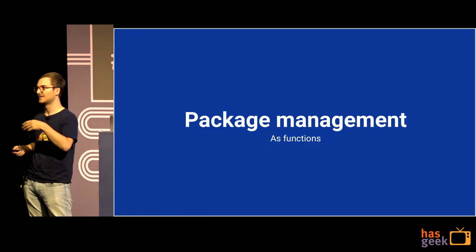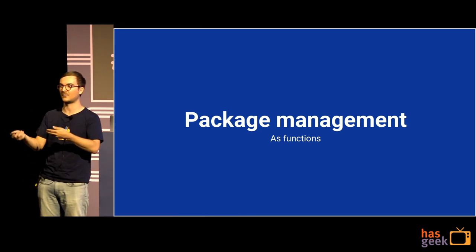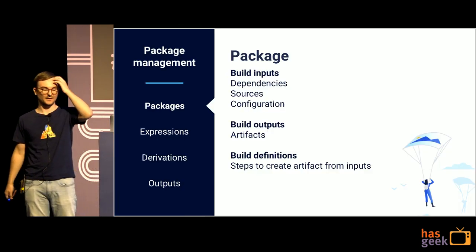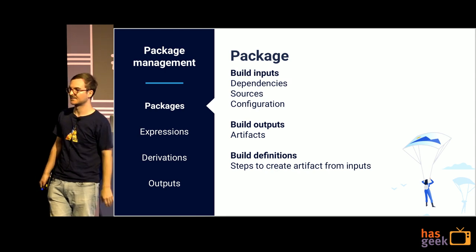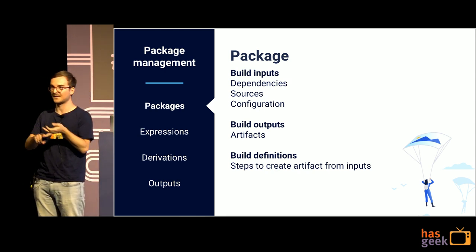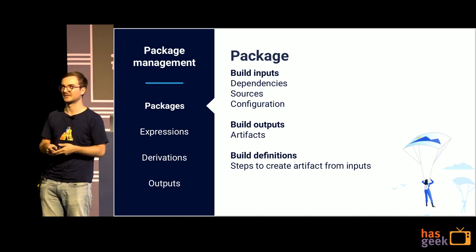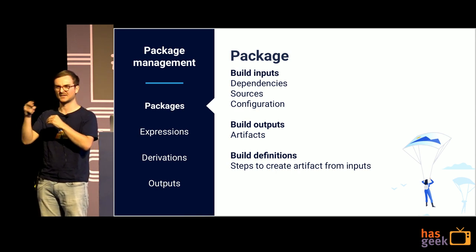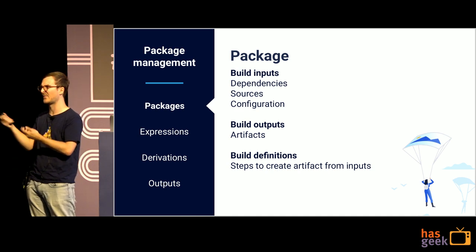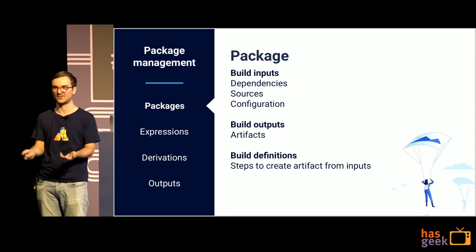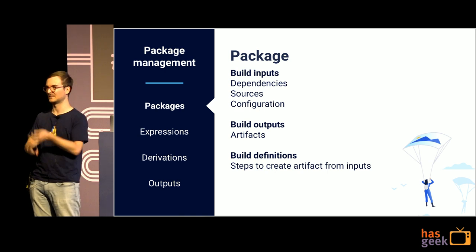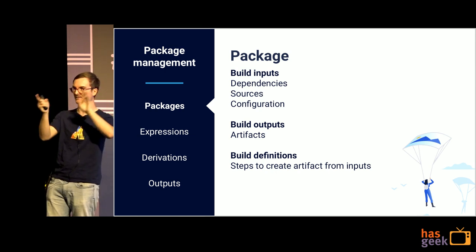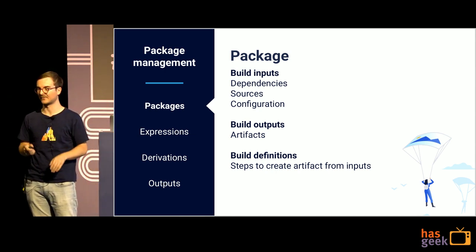We can think about package management using the idea of how to apply functions to packaging. You can think of a package as something that takes some sort of build input — the source code, other dependencies, and some configuration. You combine those together and that's the input needed to build a package. Then you've got build steps to take that input into some sort of output artifact, which might be a Debian package or just some binary. So you've got build input, steps, and build output — that's how we represent this as a function.